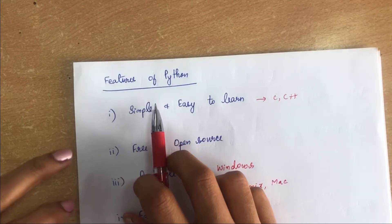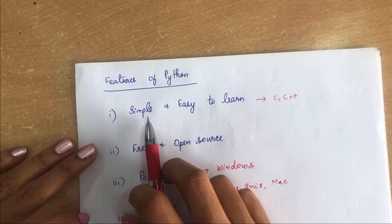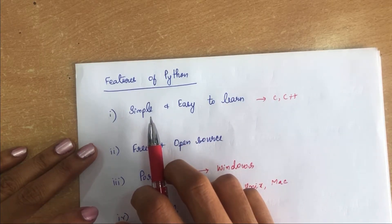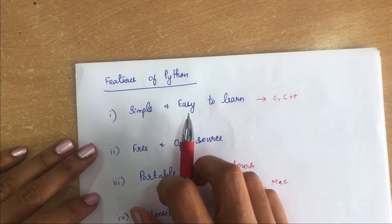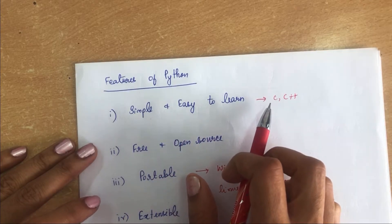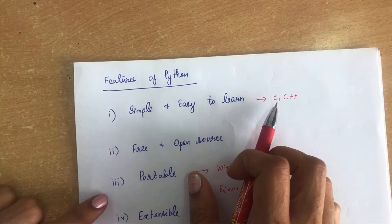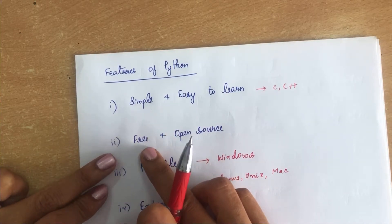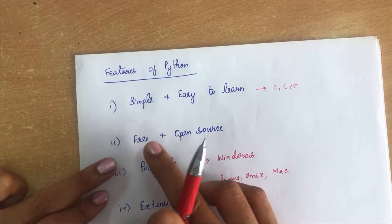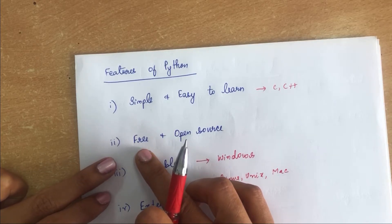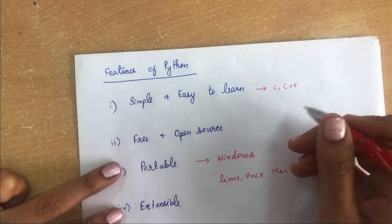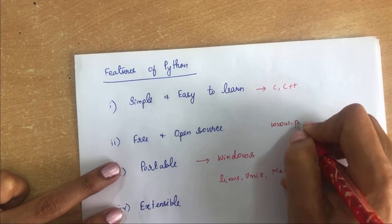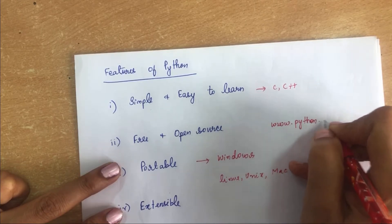Coming to the features of Python. The first is simple and easy to learn. Python is very simple and easy to learn when compared with other languages like C and C++. The second is free and open source. Python is freely available for everyone at the official website www.python.org.